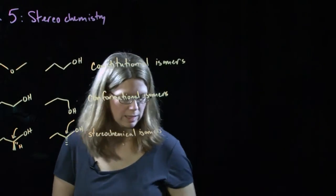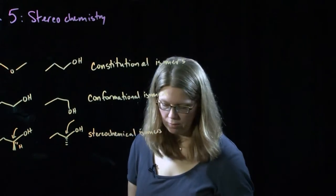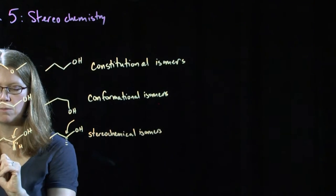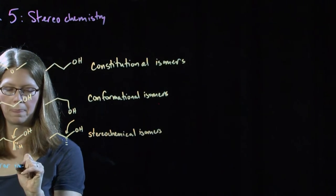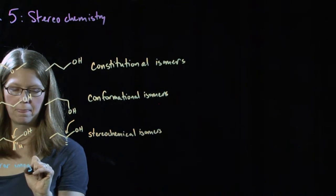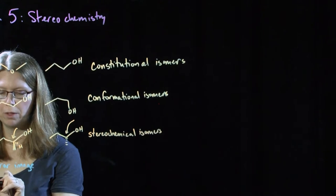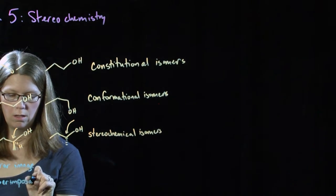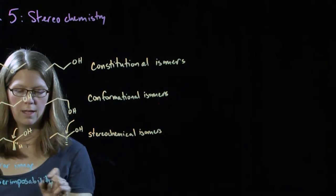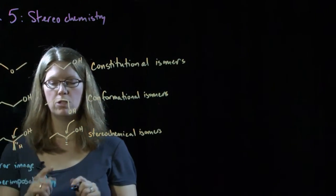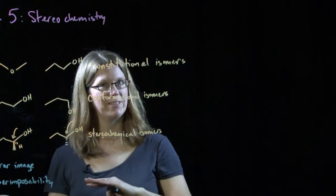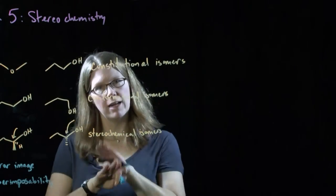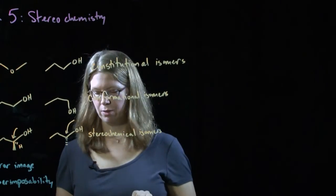The two most important ideas in thinking about stereochemical isomers are the idea of mirror image and superimposability. Mirror image means you just take the mirror image and flip everything. Superimposability means does it lay directly over the top of something else?